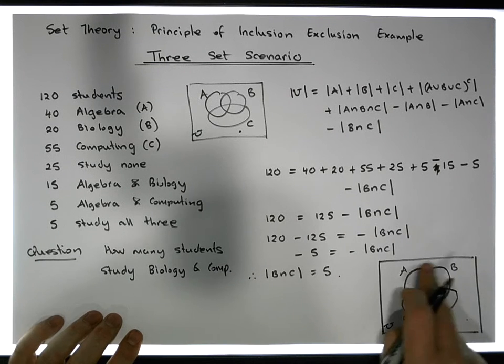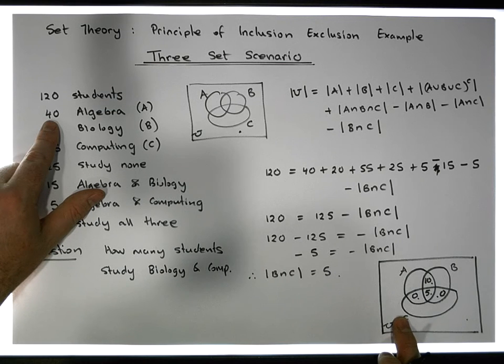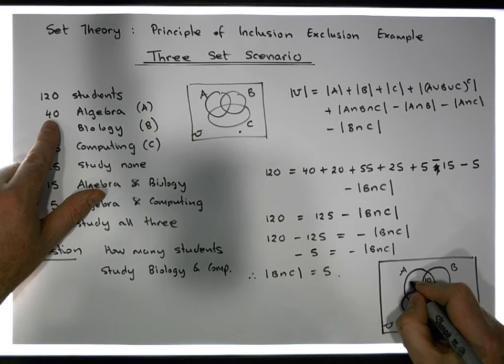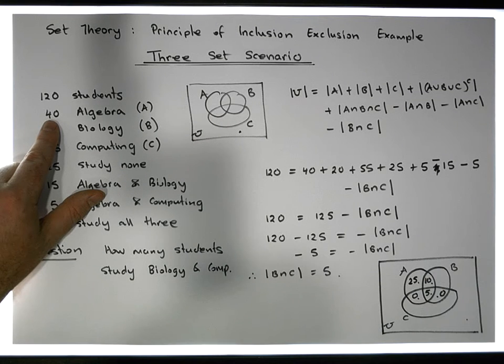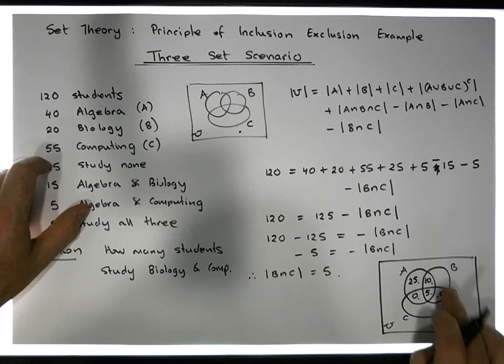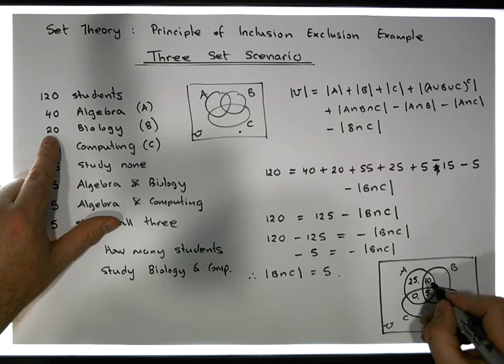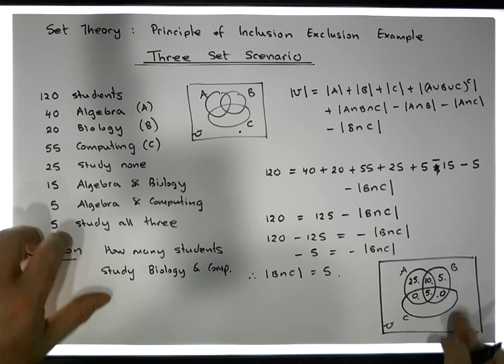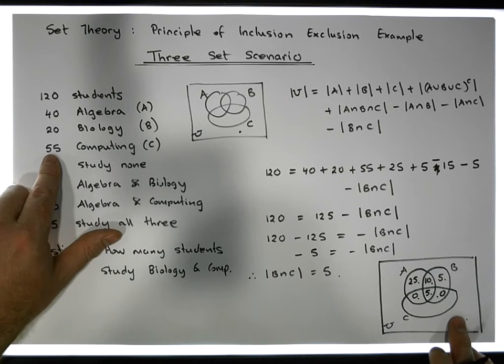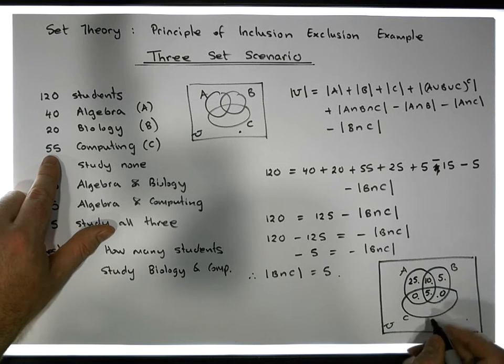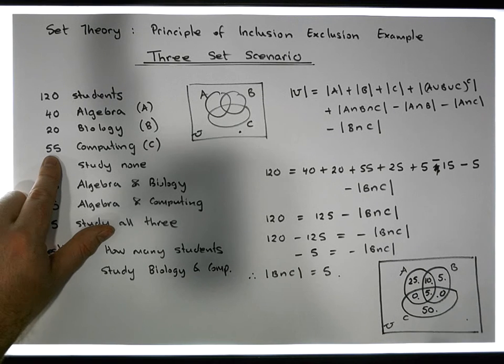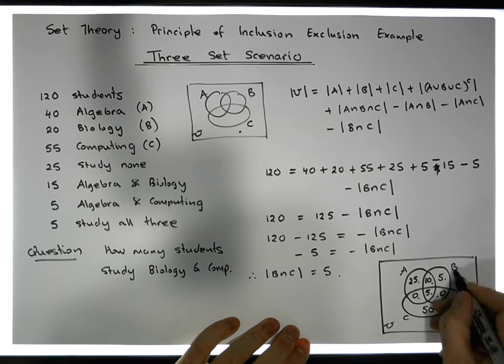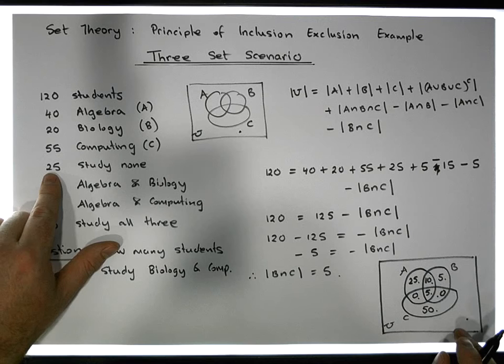How many study algebra in total? Well there's 40 people study algebra in total, so in total there needs to be 40 here, but we've already accounted for 15 of them, so there must be 25 people in that part of the room. How many study biology in totality? There's 20 people study biology, we've already accounted for 15 of them, so there must be five in that part of the room. How many study computing in totality? Well there's 55 study computing in totality, so there must be 50 people in this part of the room. And finally, what about the complement of the union of all three of these? Well we know that there's 25 that study none, so there's 25 people outside.